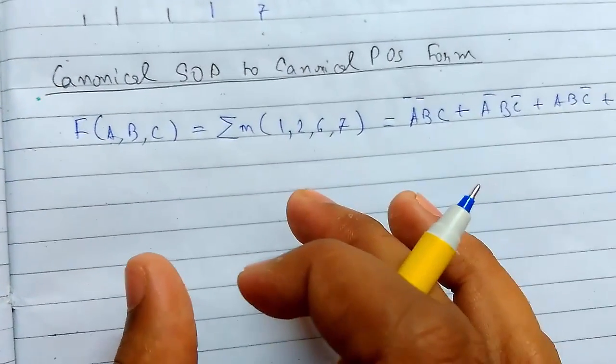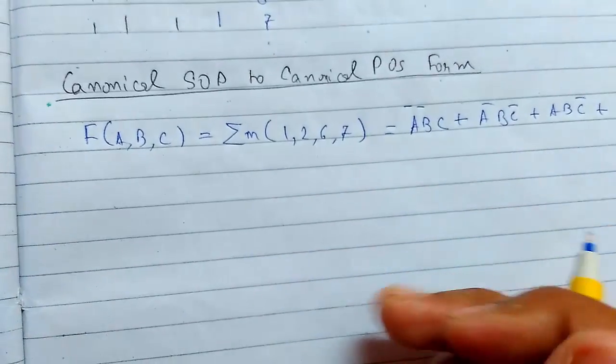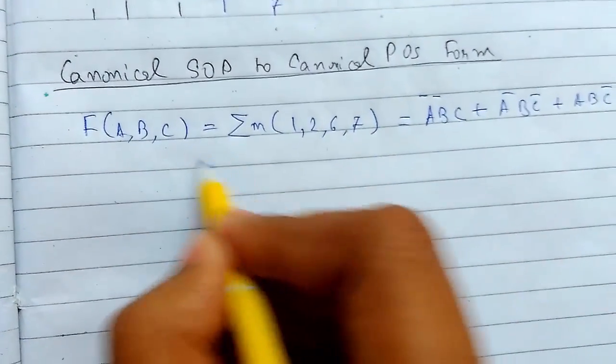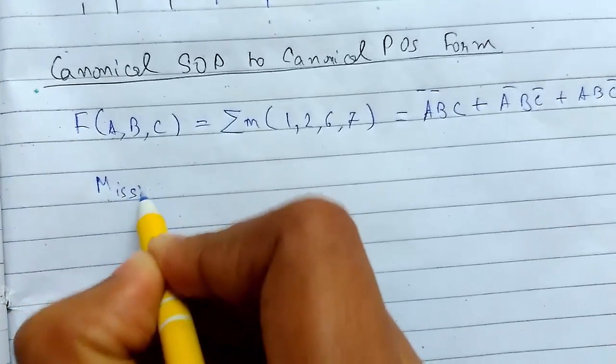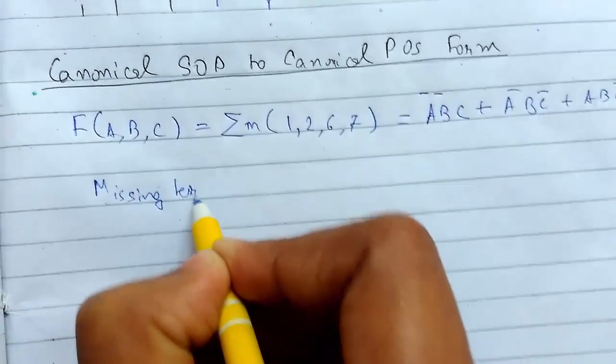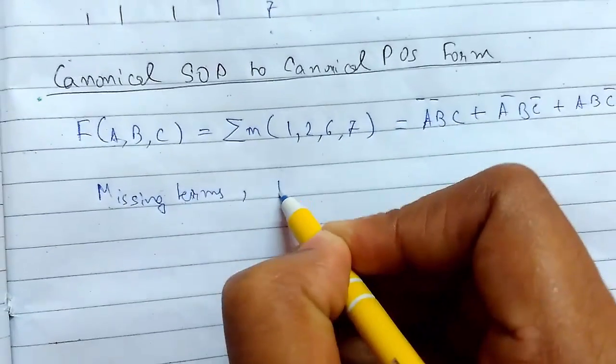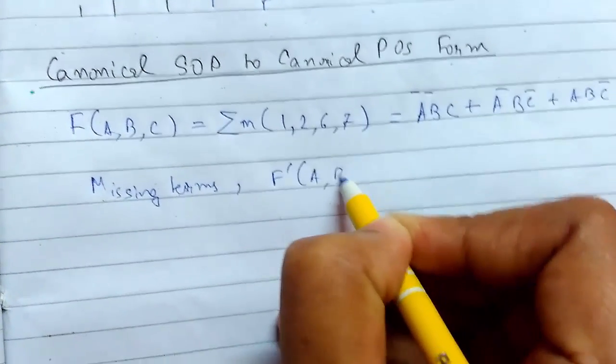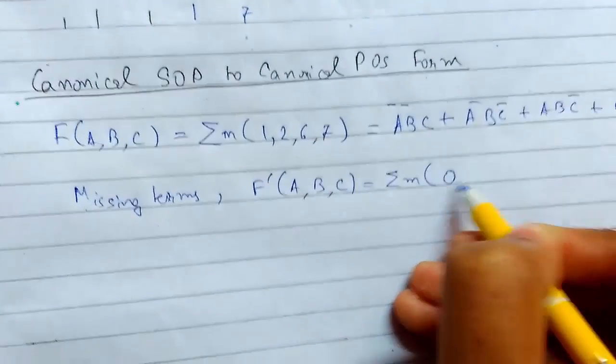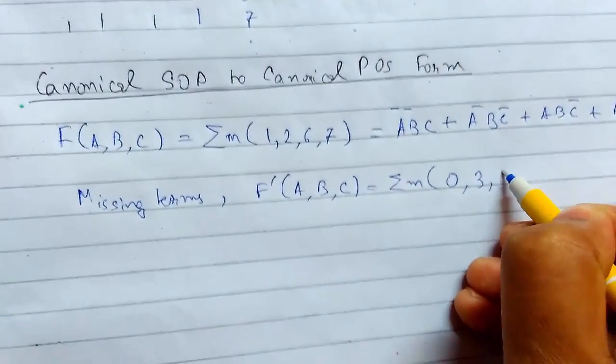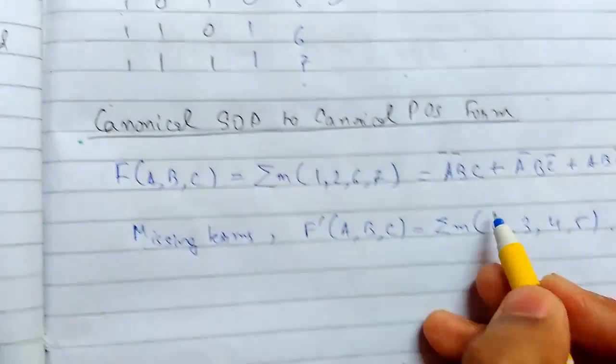We need to find the complemented forms or the missing terms in the min terms. The missing terms, which we can write as F̅, will be 0, 3, 4, and 5. These are the missing terms here.